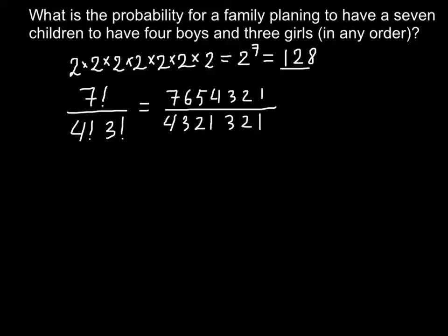Now we can cancel numbers that are the same. For example, we have 4, 3, 2, and 1 in the denominator and the same numbers in the numerator, so we can cross those out. We also have 3 below the line and 6 above, so we can cross out 3 and replace 6 with 2.